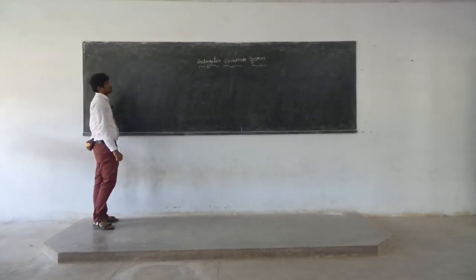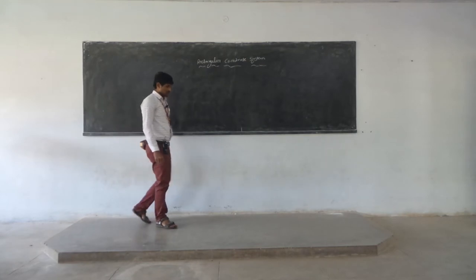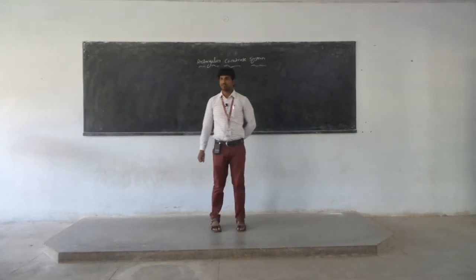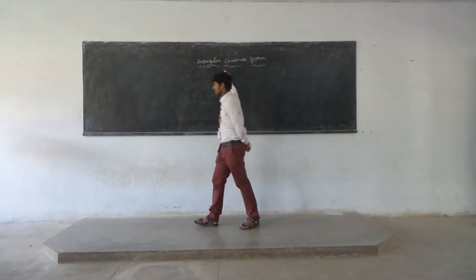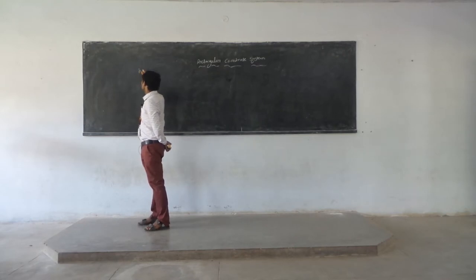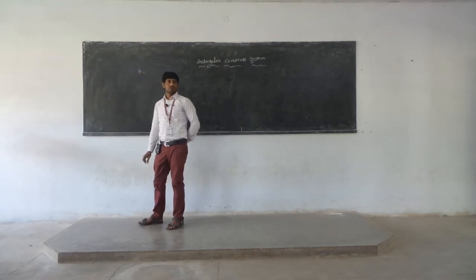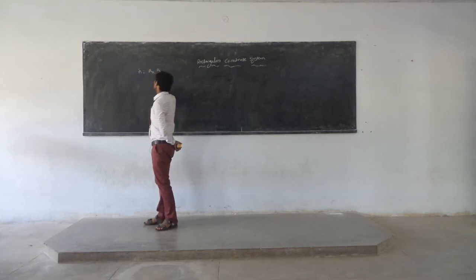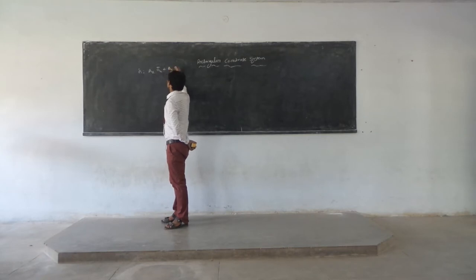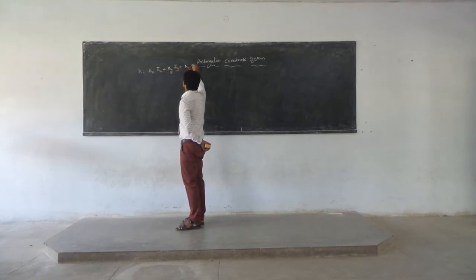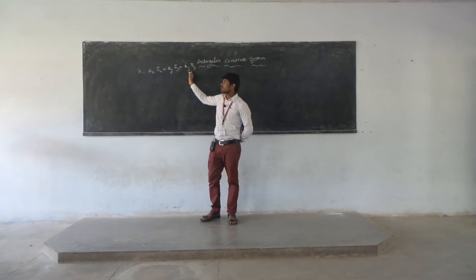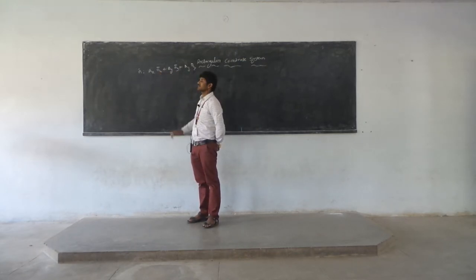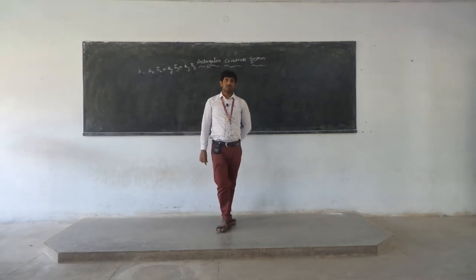Good morning. This is the rectangular coordinate system. In electromagnetic fields, the major topic is to represent a vector in a three-dimensional rectangular coordinate system. To denote a vector, assume A-bar is a vector. This vector can be denoted in the rectangular coordinate system as Ax·ax-bar plus Ay·ay-bar plus Az·az-bar, where Ax, Ay, Az denote magnitudes and ax-bar, ay-bar, az-bar represent the unit vectors with respect to the coordinates.